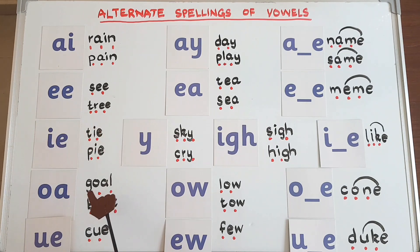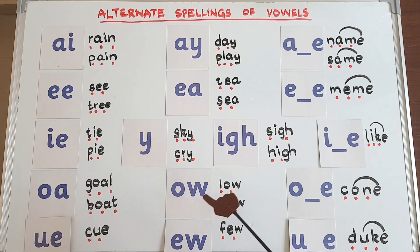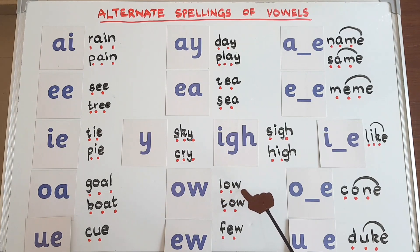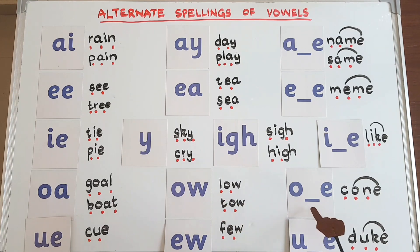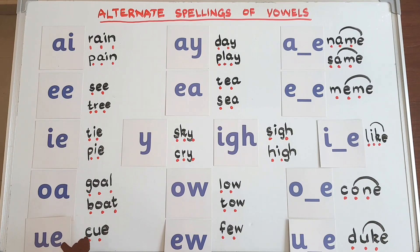Here comes the long vowel 'o' spelling — 'oa' — from the 42 sounds, as in 'gold' and 'boat'. Now this is the new one: the magic 'e' spelling — 'o_e' — like in 'lobe' and 'tote'.